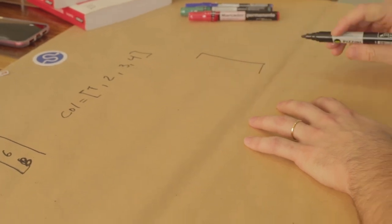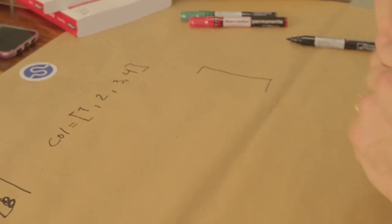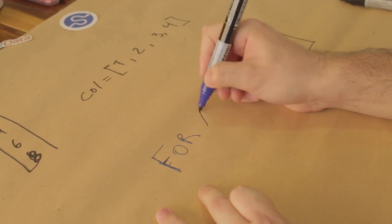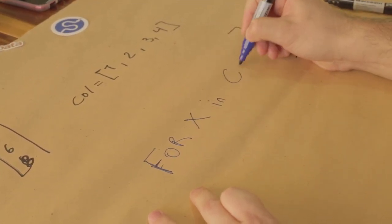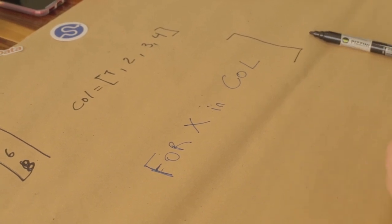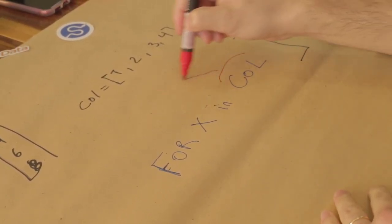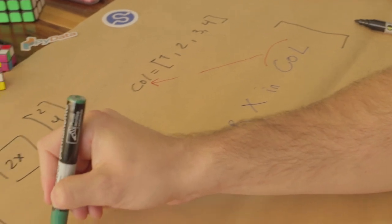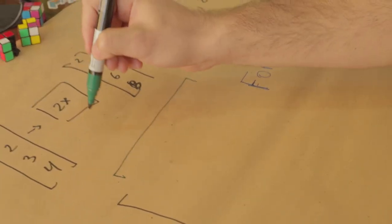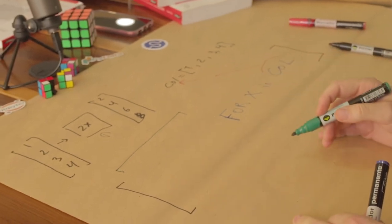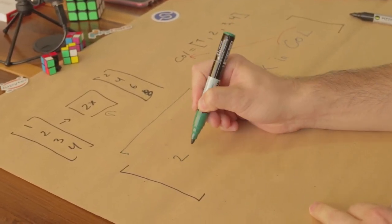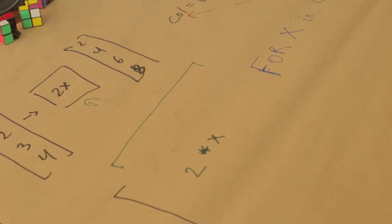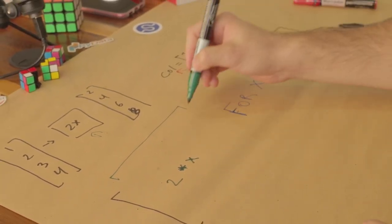The first important part of the syntax is: `for x in collection` — where 'collection' refers to the collection we defined. Then, probably the most important part, we write the transformation expression at the beginning: `2 * x`. So the full list comprehension looks like: `[2 * x for x in collection]`, which produces the same output as before.